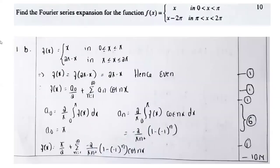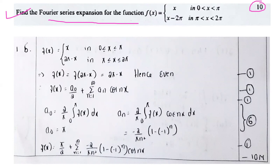I would like to introduce another type of repeated question. Find the Fourier series expansion for the function f(x) equal to x in the range 0 less than x less than pi, and x minus 2 pi in the range pi less than x less than 2 pi. Weightage is 10 marks. Now, f(x) equals f(2pi minus x), which is equal to 2pi minus x. So it's an even function.